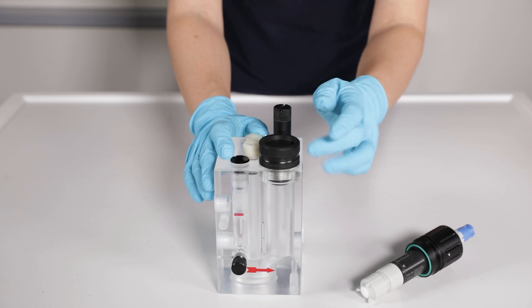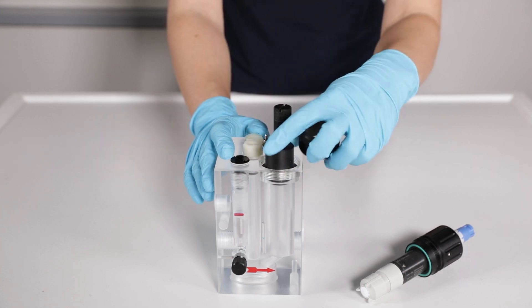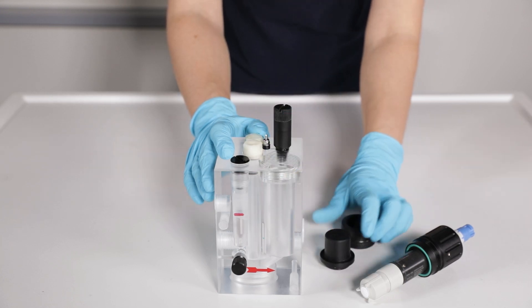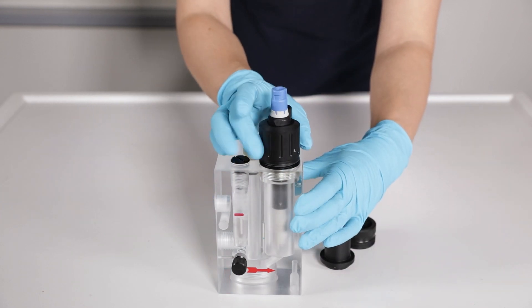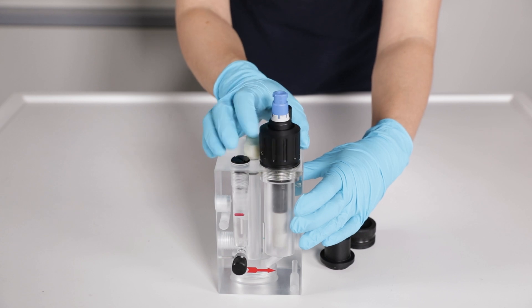For installation into the CCA250 remove the blind plug from the flow assembly and insert the sensor. Screw the adapter onto the assembly.